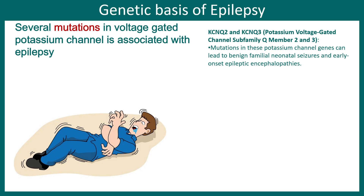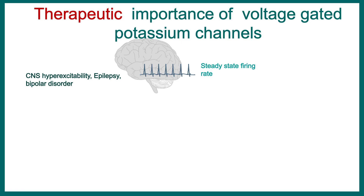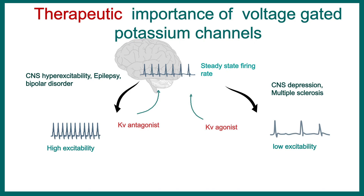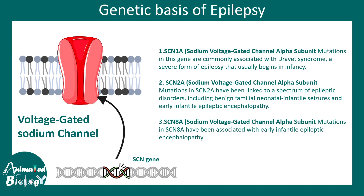Recent research has shown that voltage-gated potassium channels of the KCNQ family — especially KCNQ2 and KCNQ3 — are associated with epilepsy, with specific gene mutations in these channels discovered to cause epilepsy. Knowing the culprit channel means one can use a voltage-gated potassium channel antagonist to restore normal activity, making these channels an interesting therapeutic target. Additionally, genes encoding voltage-gated sodium channels — SCN1A, SCN2A, SCN8A — which encode several sodium channel subunits, are also found to be mutated in epilepsy patients.